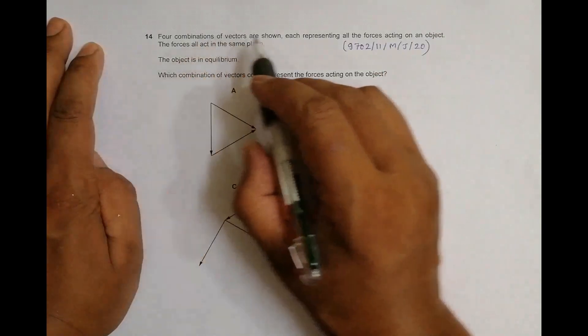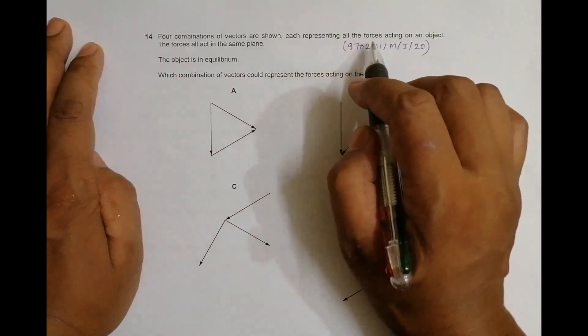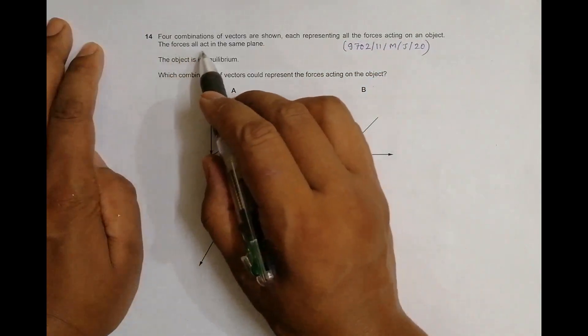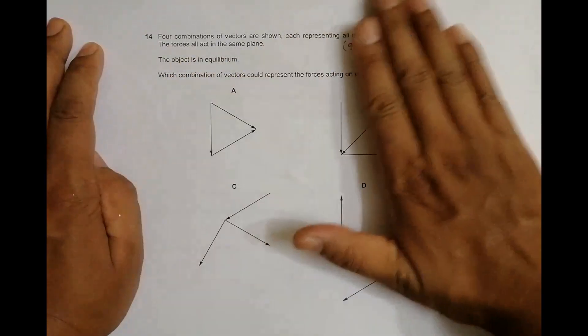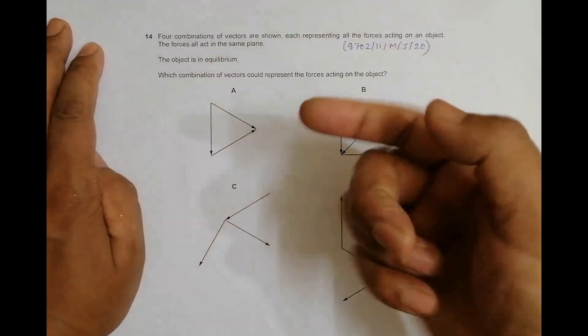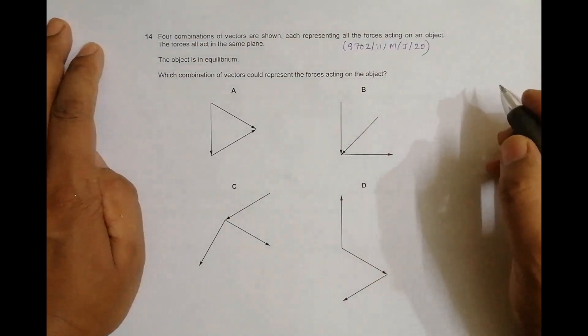It says four combinations of vectors are shown, each representing all the forces acting on an object. All the forces act in the same plane. The object is in equilibrium.